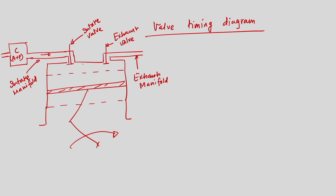The air-fuel mixture is coming through the intake manifold and entering into the engine cylinder. For the four-stroke SI engine, another important part is the spark plug, which is required to initiate combustion. We have seen that there are four different strokes: intake, compression, power, and exhaust.